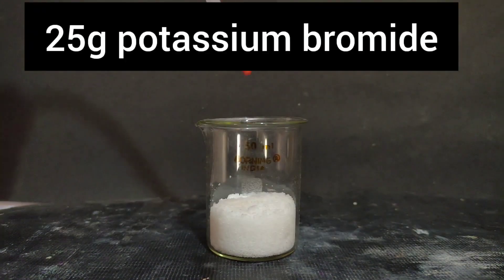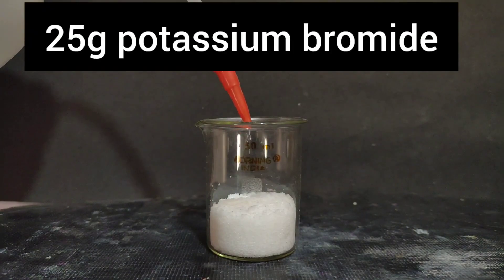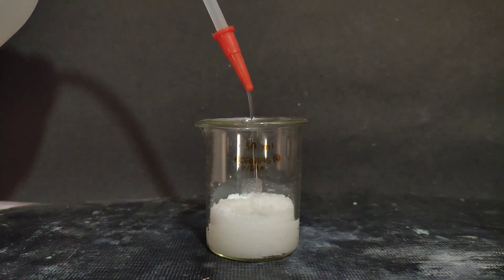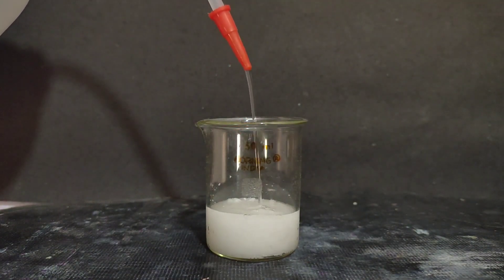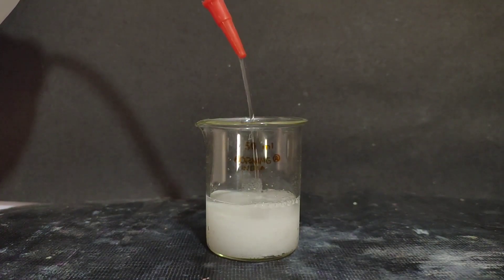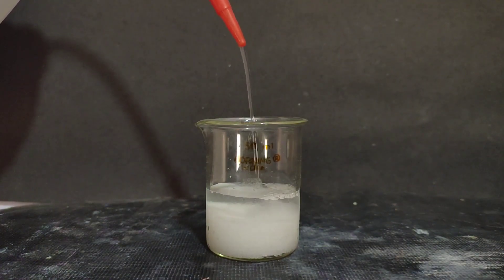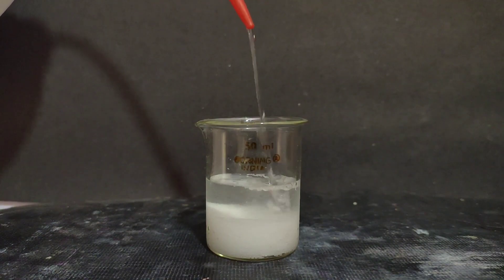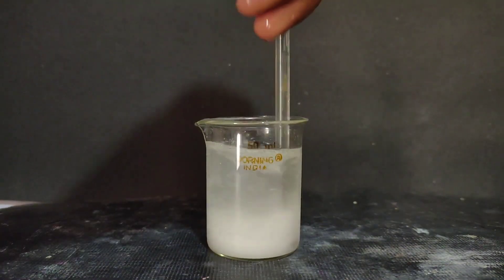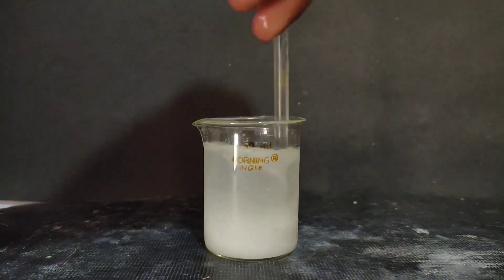So over here in this 50 ml beaker, I have 25 gram of potassium bromide, which I will be dissolving in minimum amount of water, that is around 50 ml. So I added 50 ml of distilled water and then stirred this solution to completely dissolve the potassium bromide.